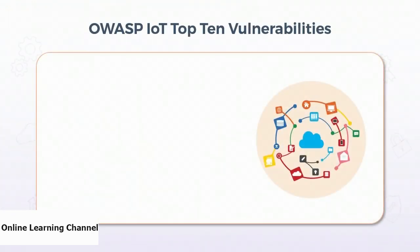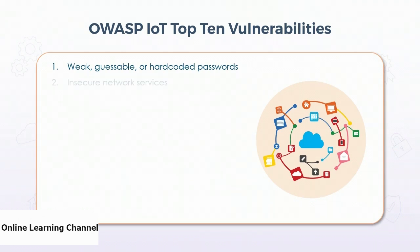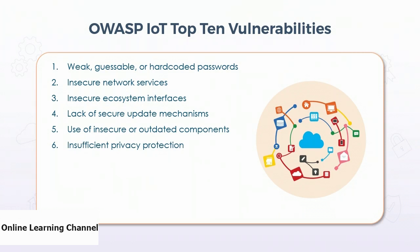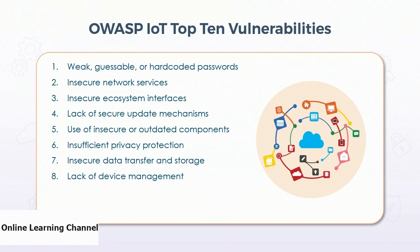The OWASP top ten IoT vulnerabilities include: weak, guessable, or hard-coded passwords; insecure network services (many newer devices have IPv6 addresses and are accessible over wireless networks); insecure ecosystem interfaces; lack of secure update mechanisms; usage of insecure or outdated components; insufficient privacy protection for personal data or credit card information; insecure data transfer and storage; lack of device management; insecure default settings; and lack of physical hardening. Additionally, IoT devices may no longer be supported by vendors, leaving their vulnerabilities unpatched on an ongoing basis.